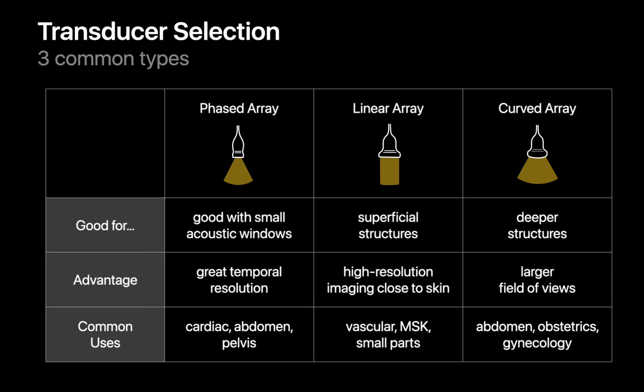Curved array transducers resemble linear array transducers but provide a wide fan-shaped image that permits larger fields of view and imaging of deeper structures. While their field of view is superior to linear array transducers, their image resolution is lower. Curved array transducers are also commonly used in abdominal imaging, obstetrics, and gynecology.